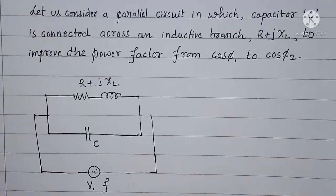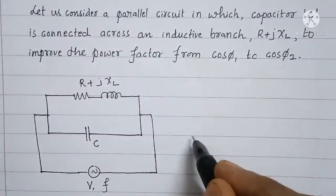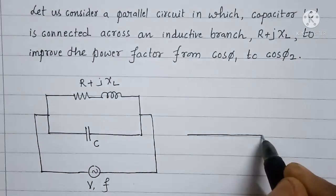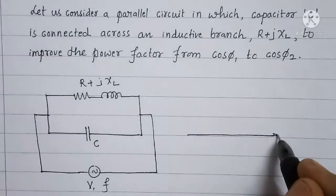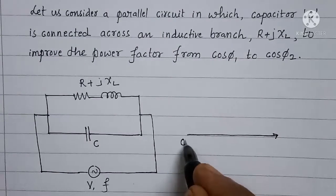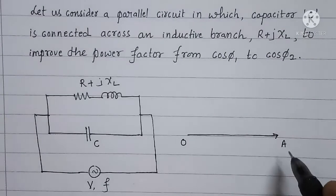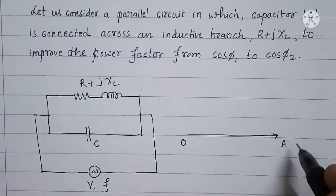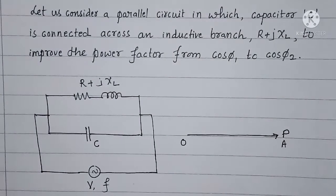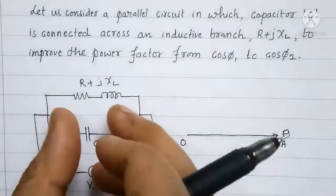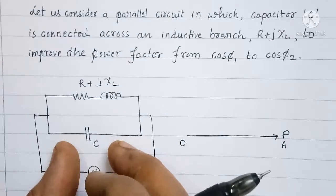Now for this parallel circuit, we will draw the phasor diagram. OA is a reference phasor, and for the power phasor diagram, I will call this reference phasor as real power P — that is, the power consumed by this RL branch. We know that a pure capacitor won't consume any real power.